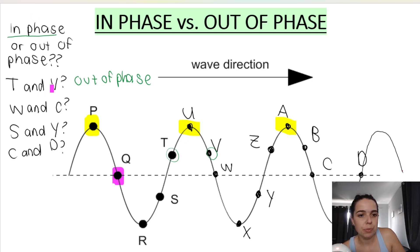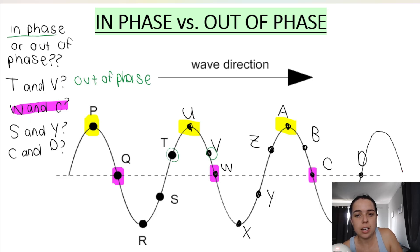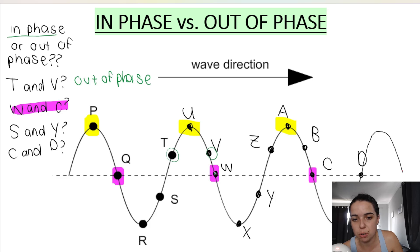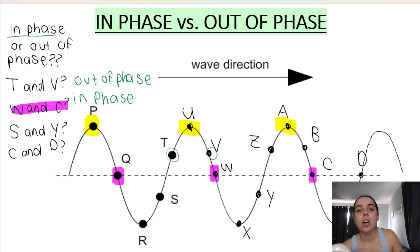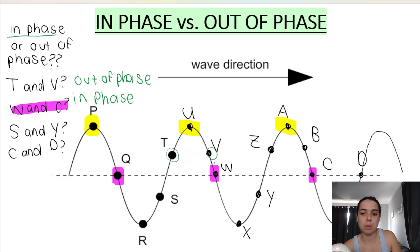What about W and C? W is here on the equilibrium position just after you pass the crest. Look at the next crest A — just after you pass that crest, you get C. So they are at the same point on the wave — they are in phase. They are separated by a whole number of wavelengths; in fact, they are separated by one wavelength.